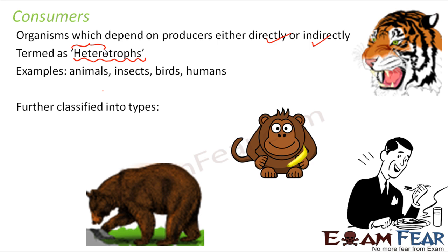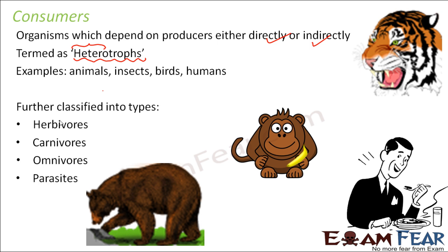Since a huge variety of animals fall under the category of consumers, a further classification has been done. These consumers, based on their specific food habit, have been classified into the following types: herbivores, carnivores, omnivores, and parasites. They are all dependent on other organisms for their food, but how exactly they derive their food determines which category they fall into.